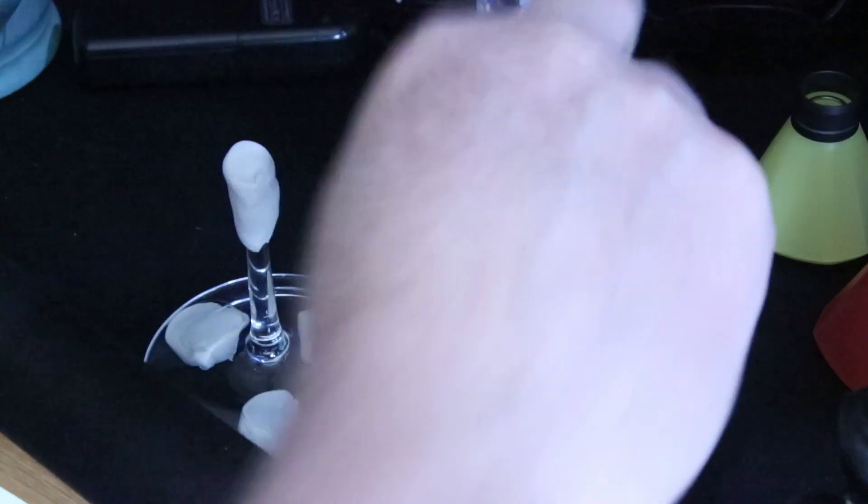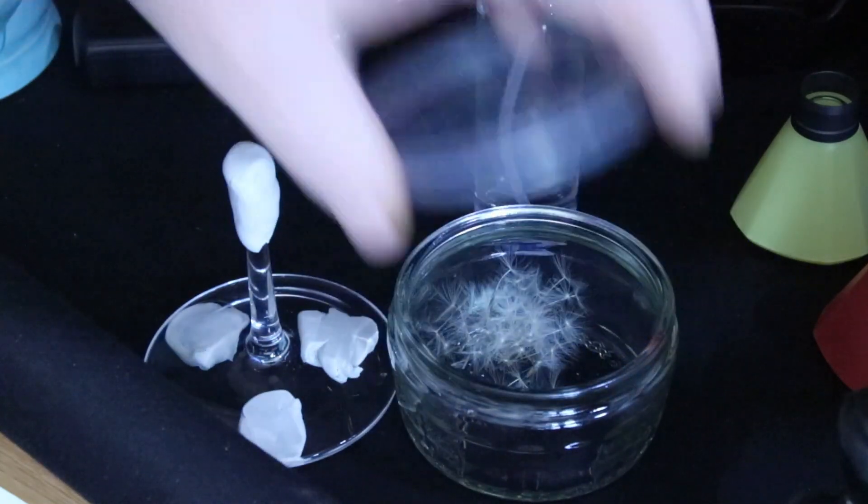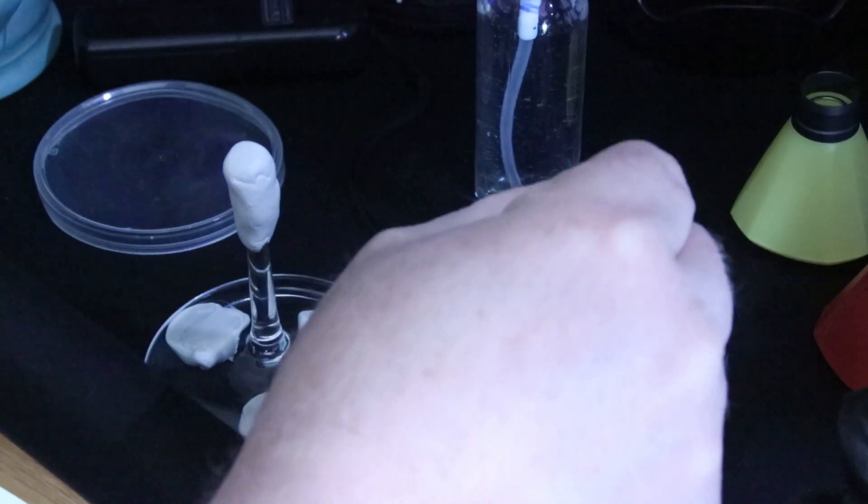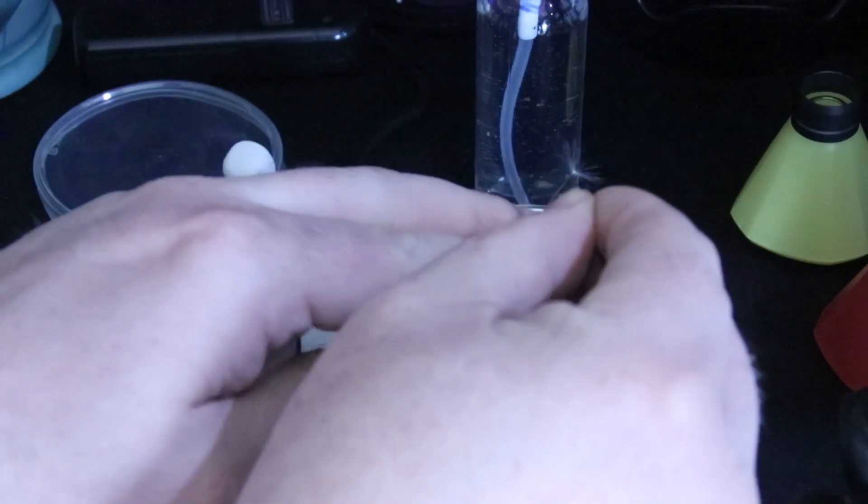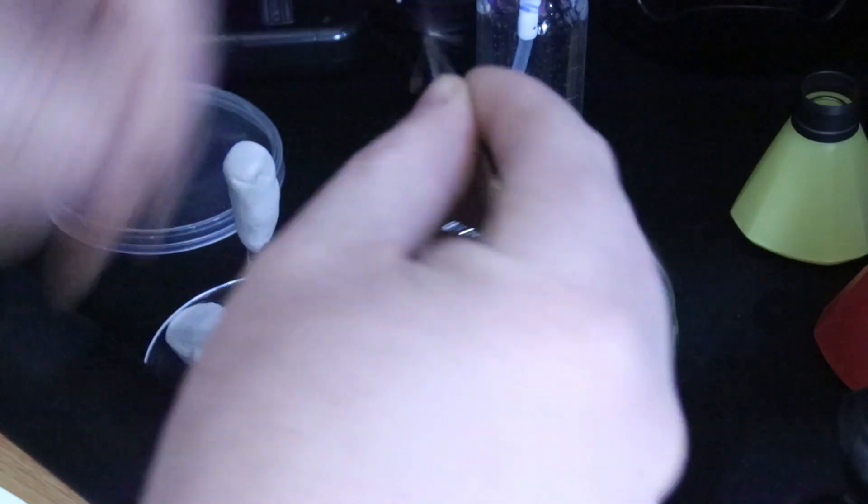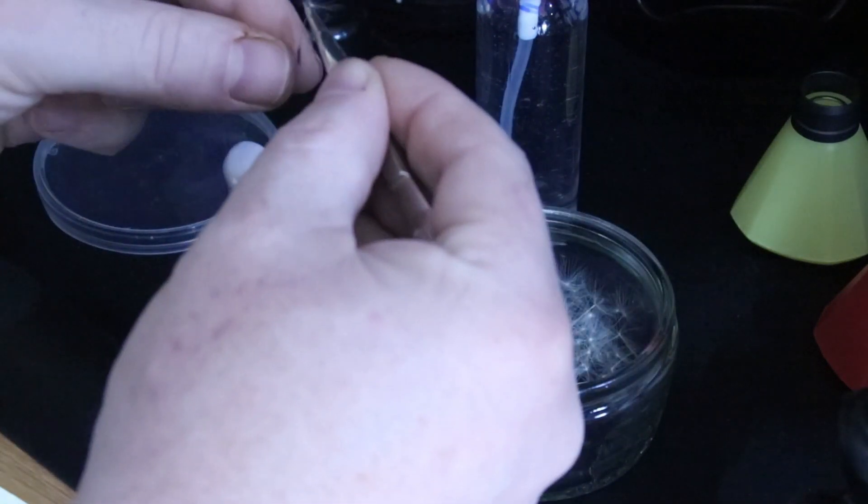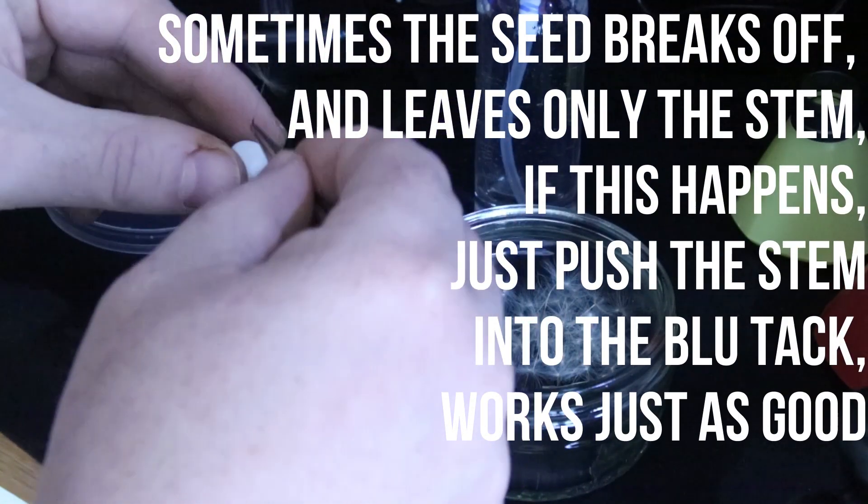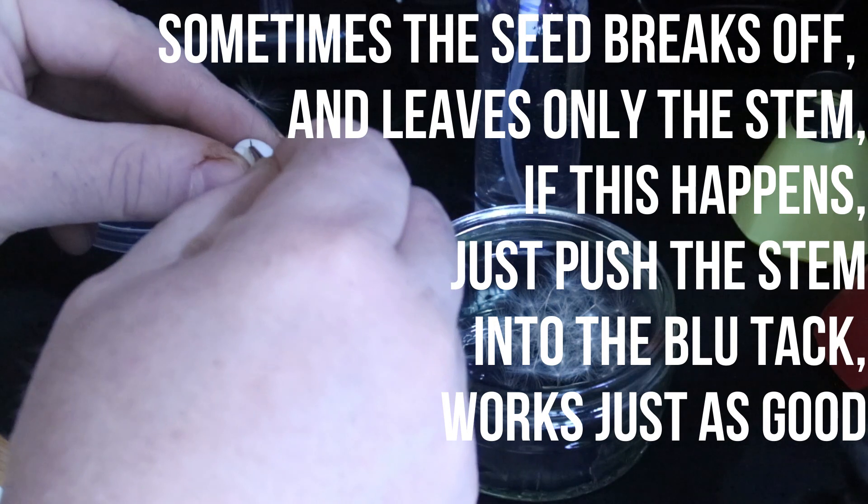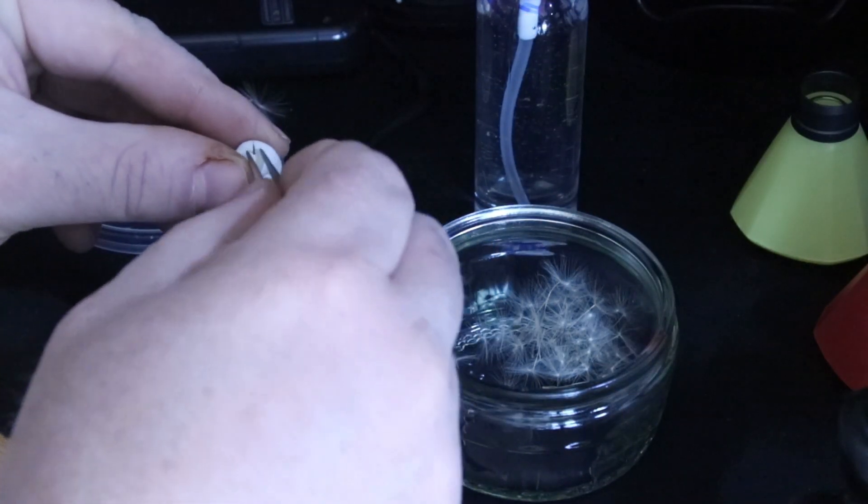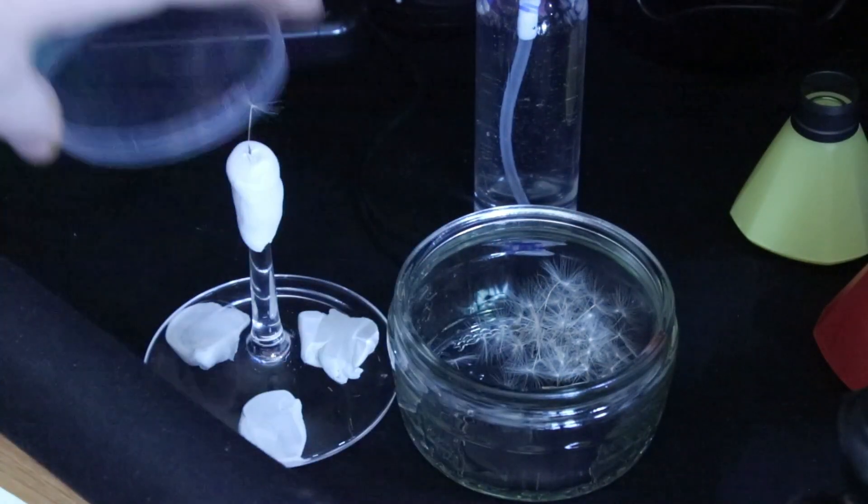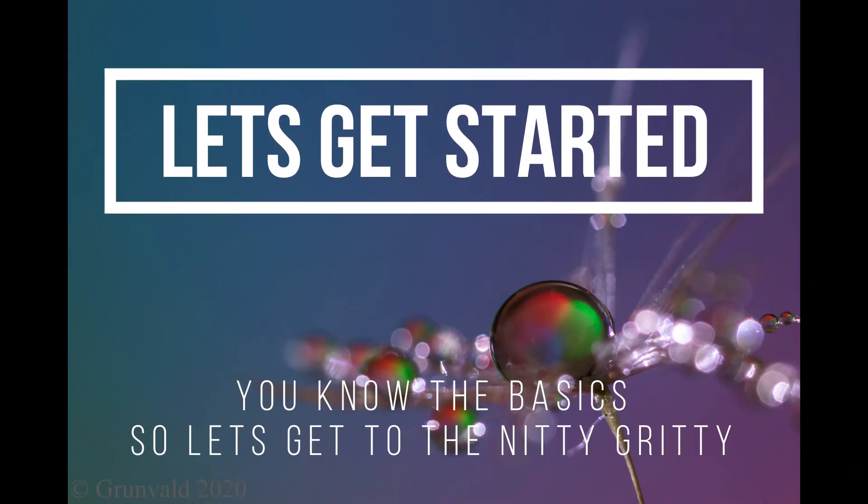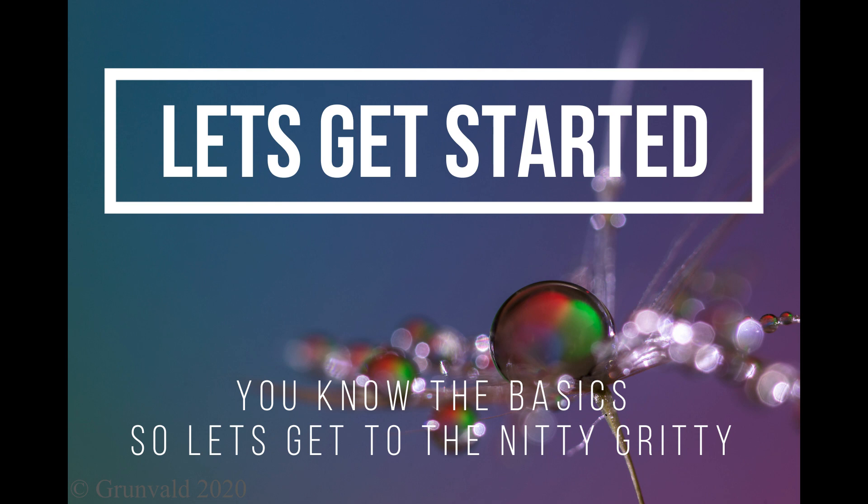What we first need to do is get a suitable dandelion seed, just a single one, preferably one which has got a lot of upgoing outside bristles on it. This helps hold the water in place. Got the bottom of the seed, just stick it into the piece of blue tack, like that.